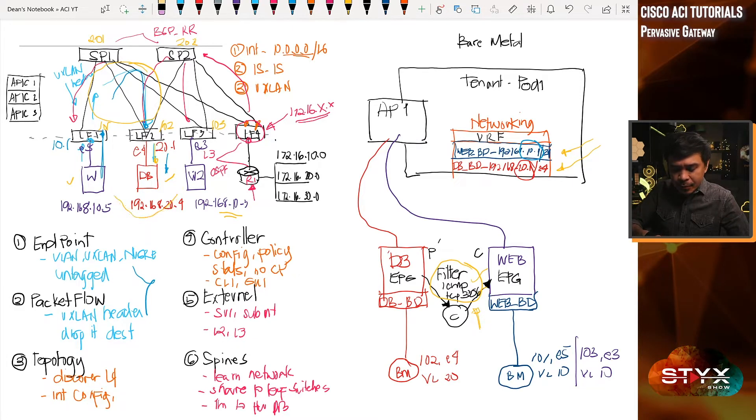Let's have another example. It's web server2 to database server. So we'll do this like what we did from the previous discussion, from the previous example. So what happens is if the web server2 sends traffic to the database, obviously it goes to leaf3.